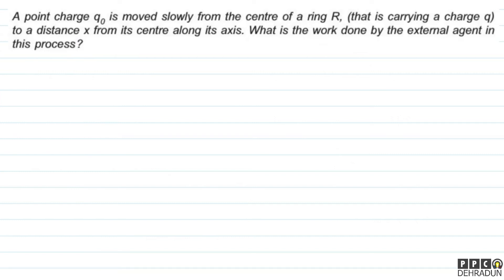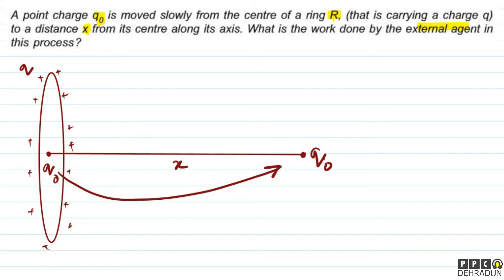Now a simple problem: a point charge q₀ is moved slowly from the center of a ring of radius R carrying charge q to a distance x from its center along its axis. What is the work done by the external agent? Here q₀ starts at the center of the ring and is moved to a point at distance x along the axis.